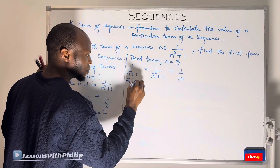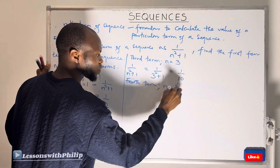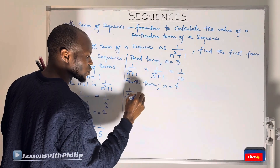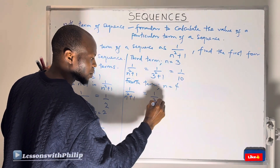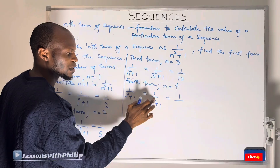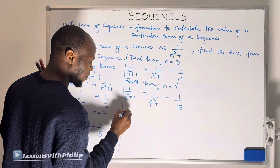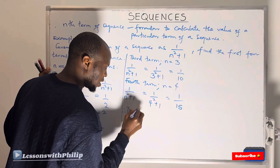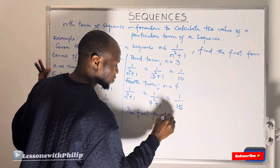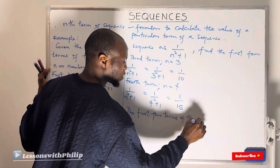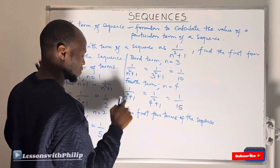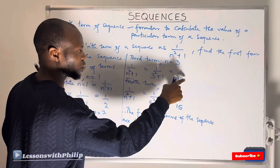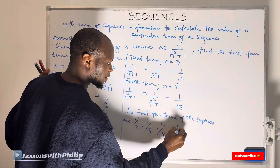For the fourth term, N = 4. Substituting into the nth term formula: 1 over (4² + 1) = 1 over (16 + 1) = 1 over 17. Therefore the first four terms of the sequence are 1/2, 1/5, 1/10, and 1/17.